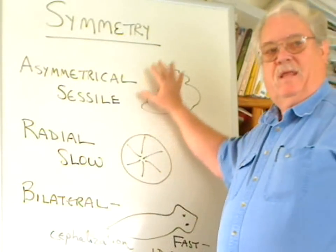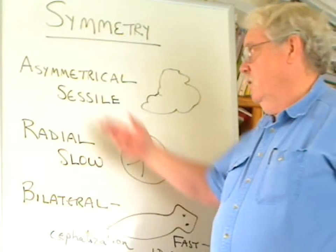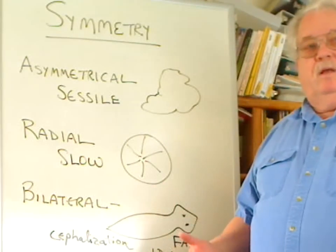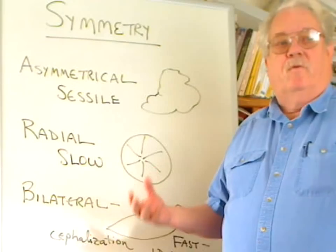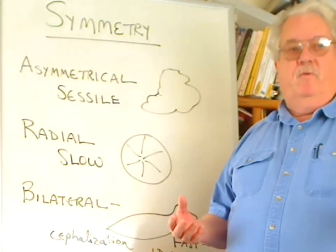Asymmetrical is without any real symmetry. They just grow. They're generally what we call sessile organisms, means they stay in one place. They have no need for movement, and therefore no need for special body design to incorporate movement.